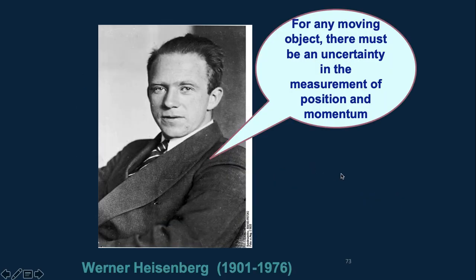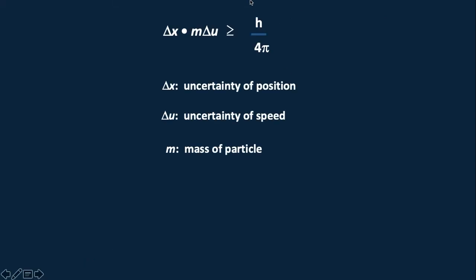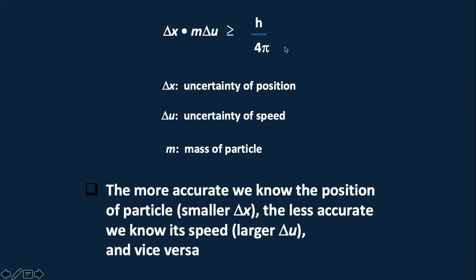For any moving object, there must be an uncertainty in the measurement of position and momentum. So delta x, the uncertainty of position, multiplied by mass of particle delta u, the uncertainty of speed, must be equal to or more than Planck constant over 4π. The more accurate we know the position of particle, which means the smaller uncertainty of the position, the less accurate we know its speed, which means the larger the uncertainty of speed, and vice versa.